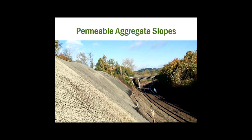Here's the final solution — a permeable aggregate slope that requires no maintenance. It's perfectly acceptable for the GeoWeb panels to be visible as you see here; it's not going to affect system performance. The permeable aggregate reduces water runoff and eliminates the potential for fallen vegetation on the track.